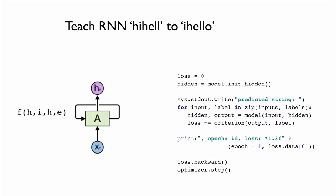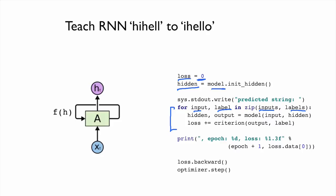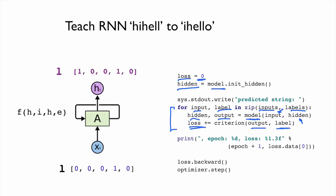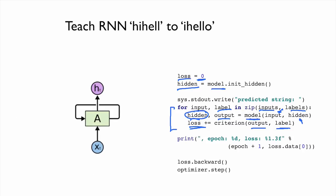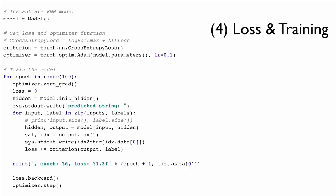We feed letters one by one using a simple for loop. We start with loss equal to zero and get an initial hidden from the model. In each iteration, we get one letter and one label, call the model's forward pass with the input and hidden, get the output and new hidden, compute the loss using the label, accumulate the loss, and pass the hidden to the next cell. Once the loop completes, we do the backward pass to train the model.